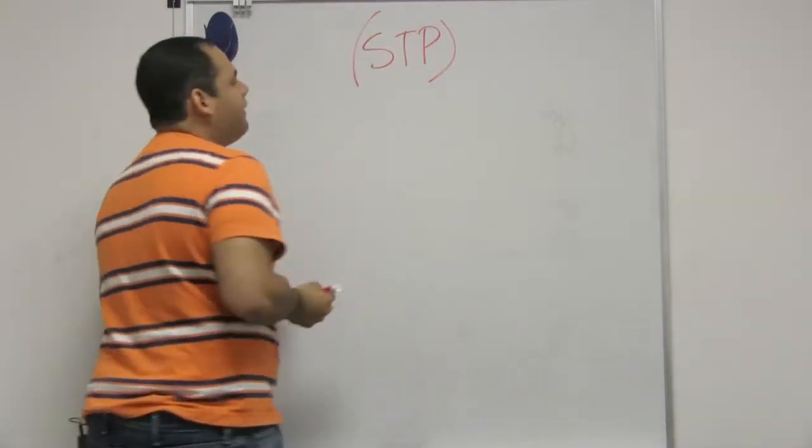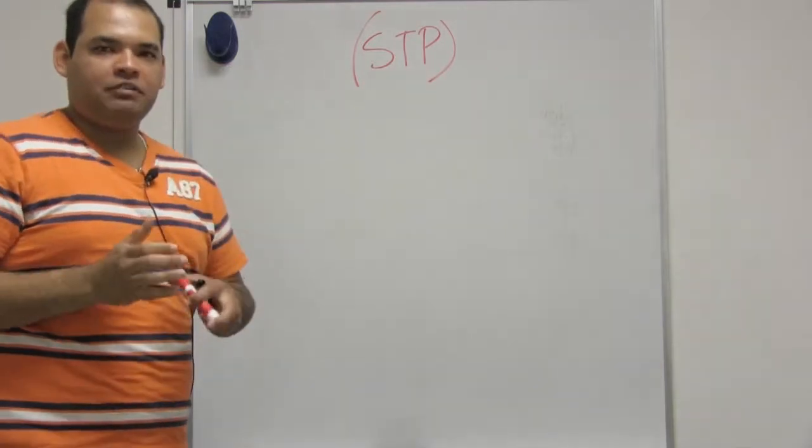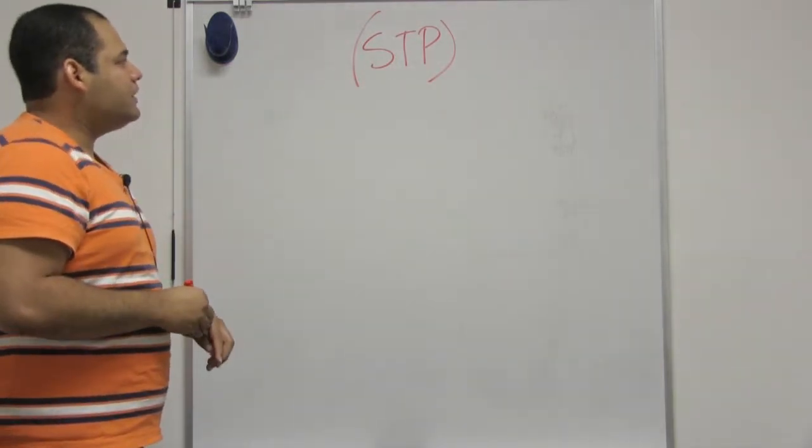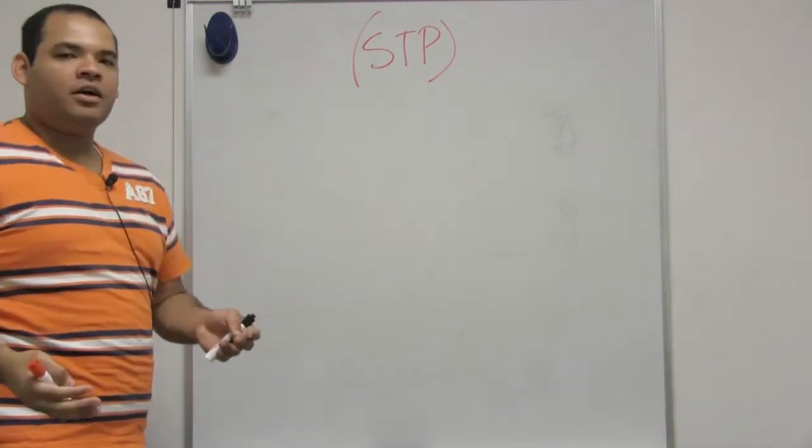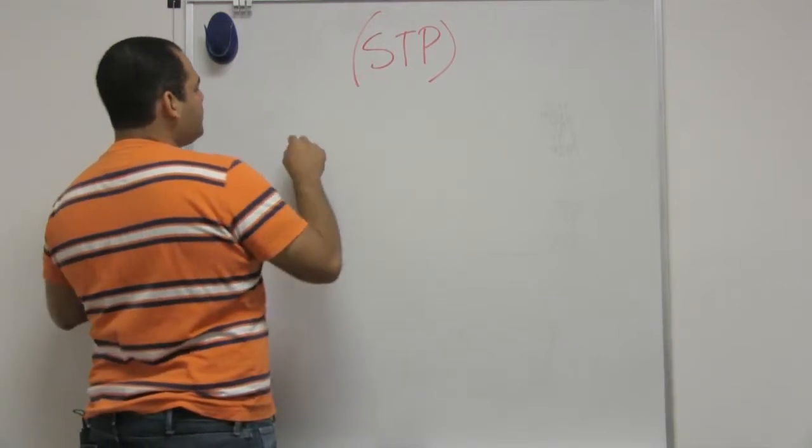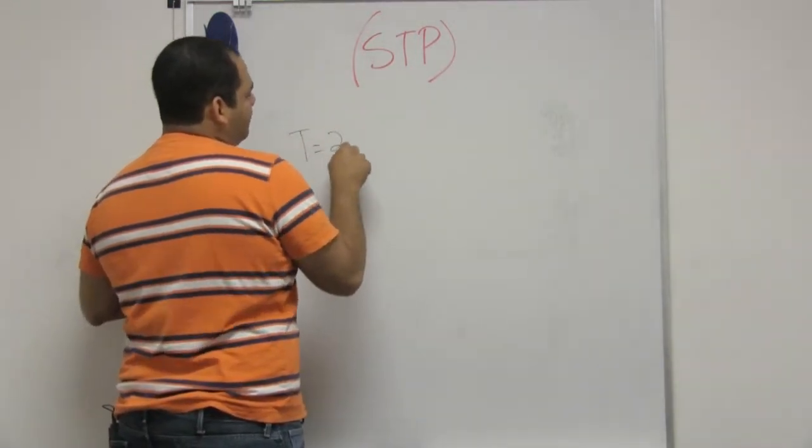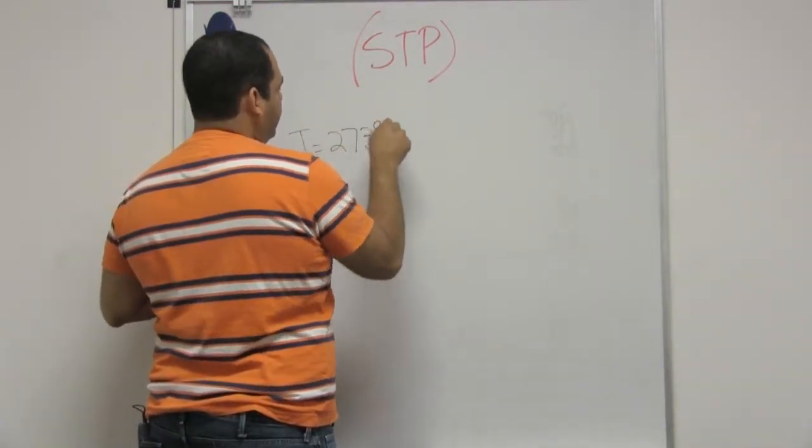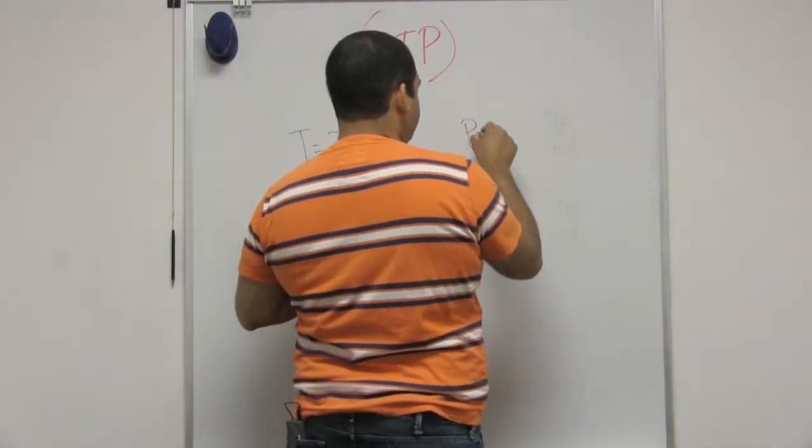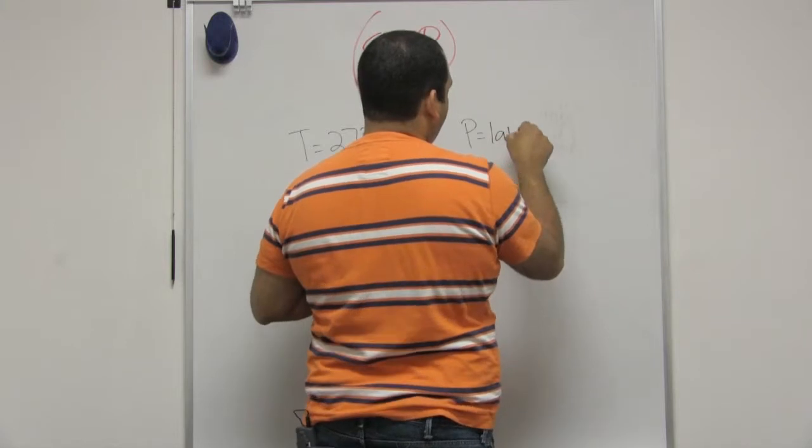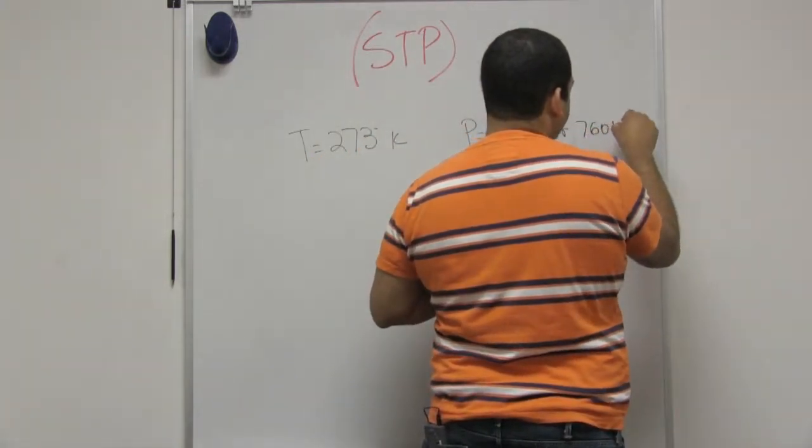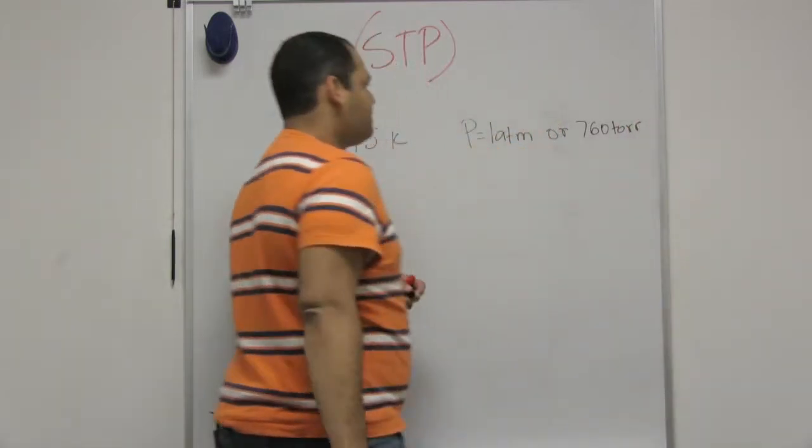Because temperature and pressure both affect the volume, it is convenient for us to have a standard temperature and a standard pressure. So the standard temperature is 273 kelvin and the standard pressure is equal to 1 atm or 760 torr.